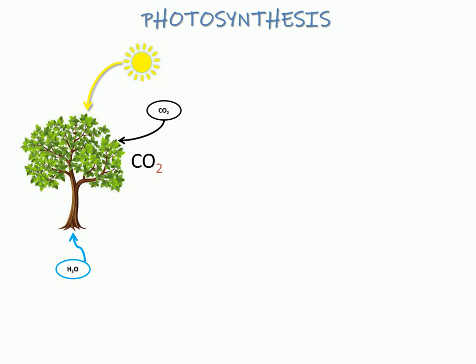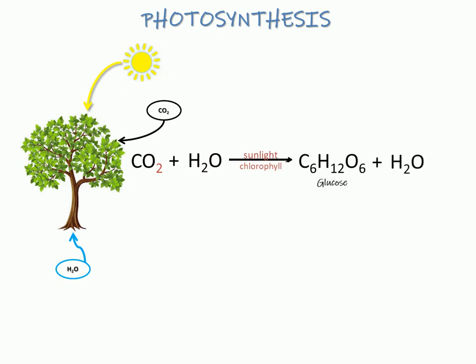CO2 comes in from the atmosphere, water from roots. And with the help of chlorophyll, sunlight is trapped in the plant. Finally, glucose is being synthesized, along with the release of water in the form of water vapors and oxygen in the form of gas.